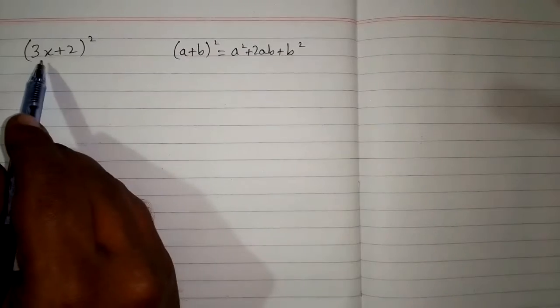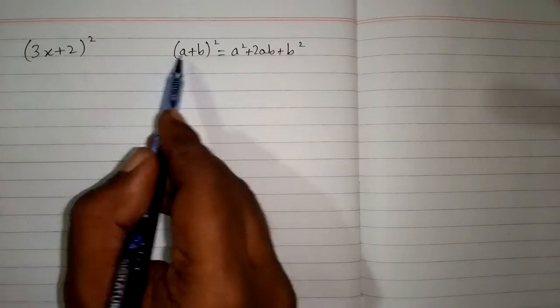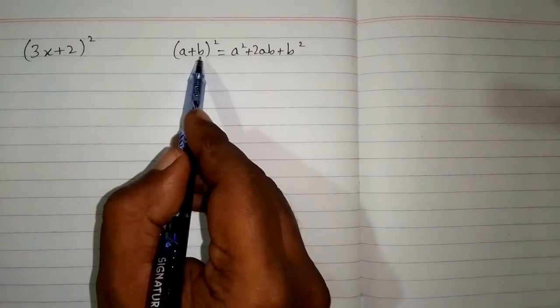So we can apply this formula over here and we can see that we have 3x in place of a and 2 in place of b.